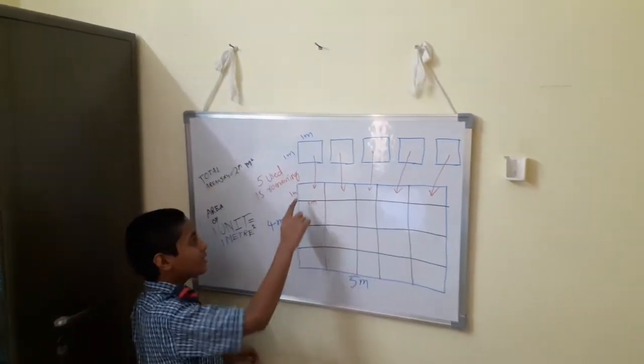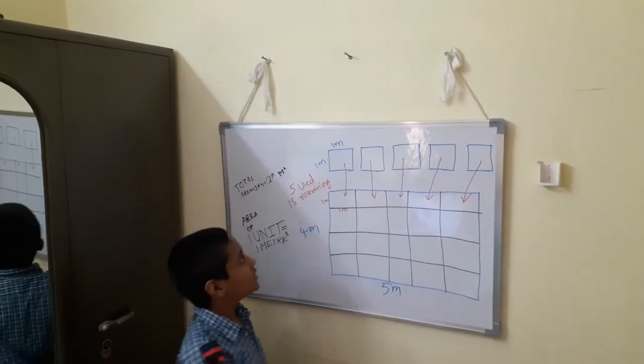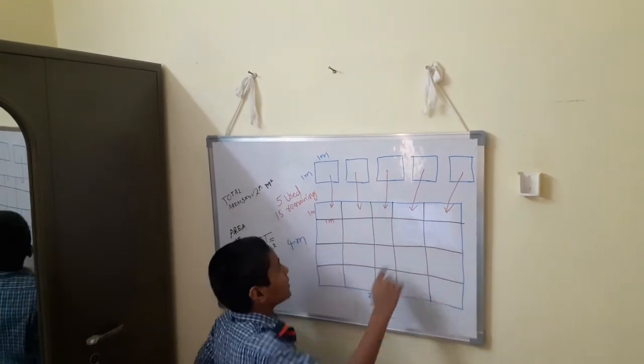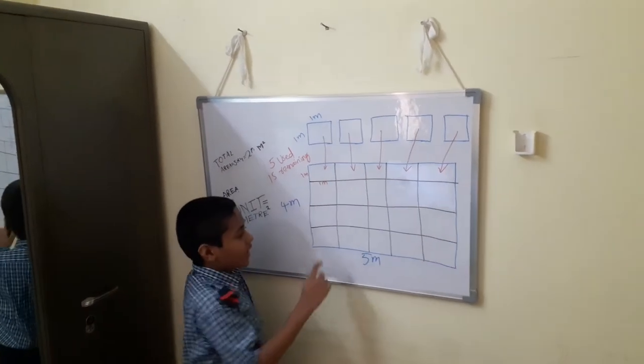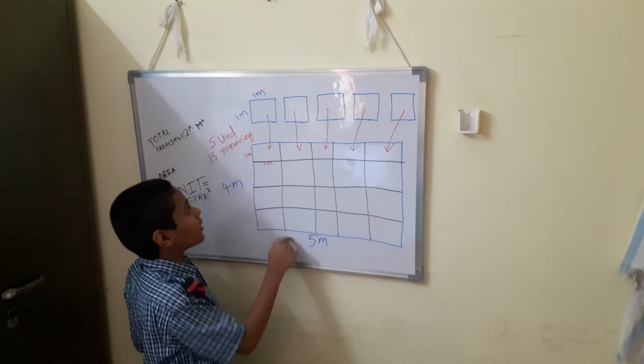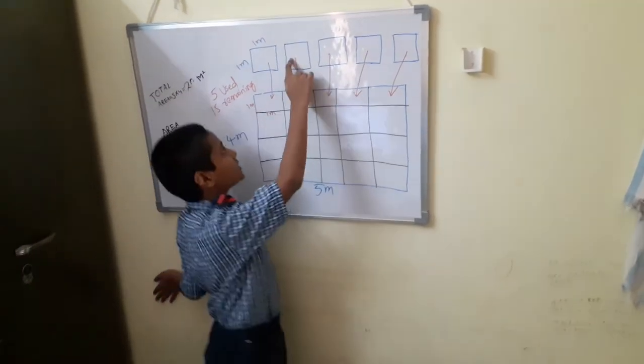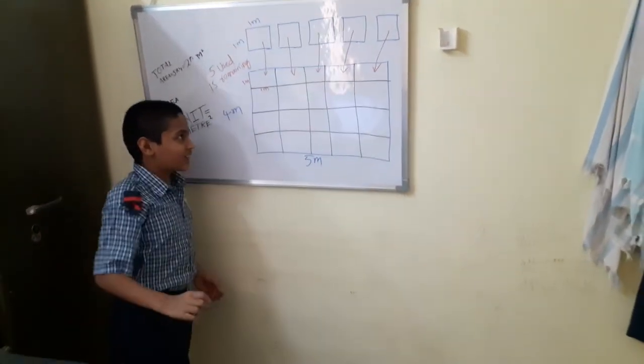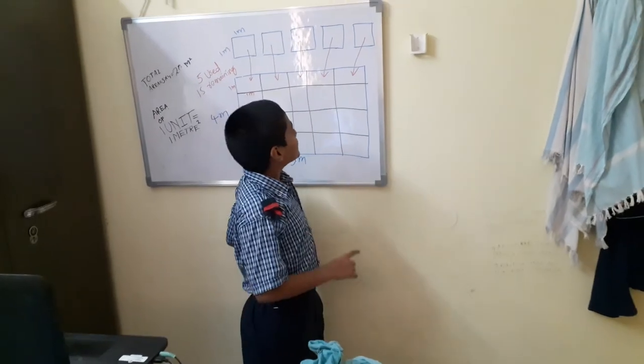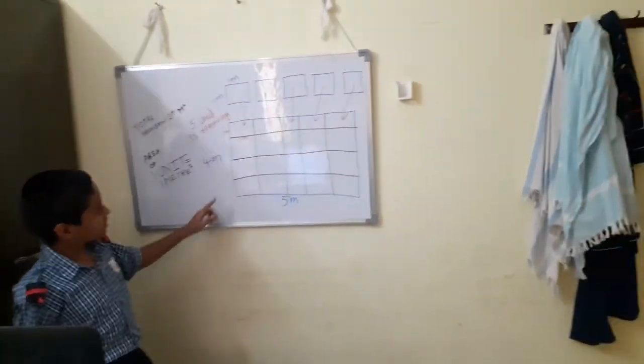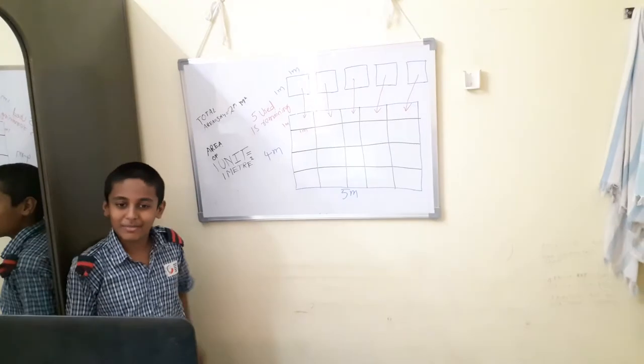Ma'am, will take the square flower beds to here, ma'am. Each one meter. Area is twenty meter. Five square flower beds, one meter each is, ma'am they'll take five meters. Total twenty meters. Twenty minus five is equal to fifteen meters, ma'am.